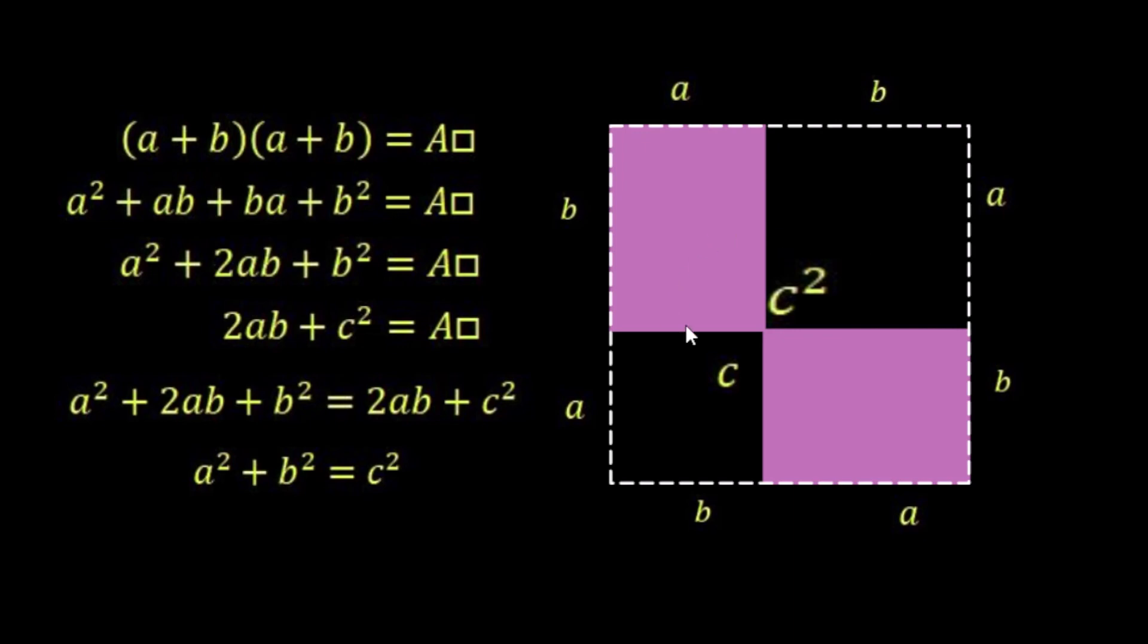And also you can see here that these two equations hold because we've seen this one previously. Now this one here is going to be the area a² plus the area b², and this 2ab is just going to be the area of a times b and a times b.